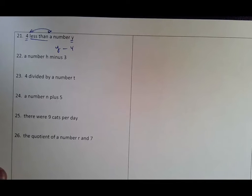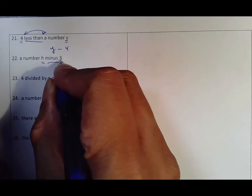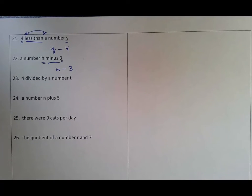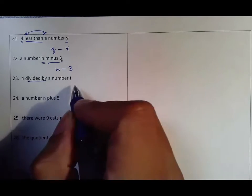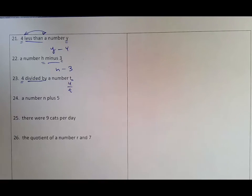A number h minus three: minus means subtract, h first, three second. Respect the order. As long as you do that, everything will work out. Four divided by a number t: divided by means it's a fraction. Whatever's first goes on top, whatever's second goes on the bottom—four over t is it.